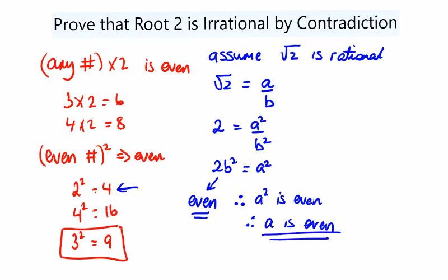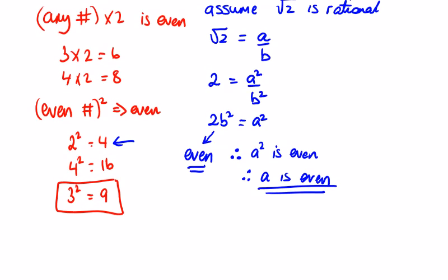So if a is even, a can be written as 2 times any other number. Let's call it 2 times p. So now what we have is 2b squared would be equal to a squared,